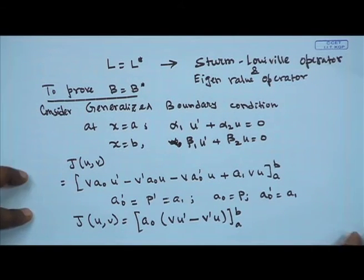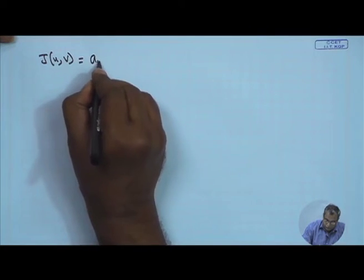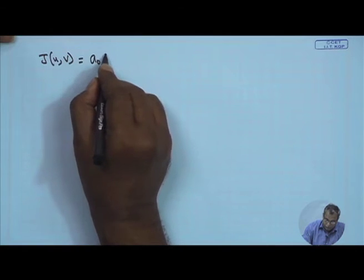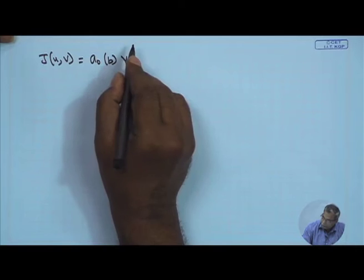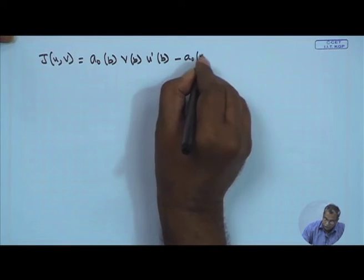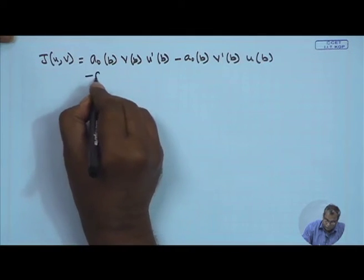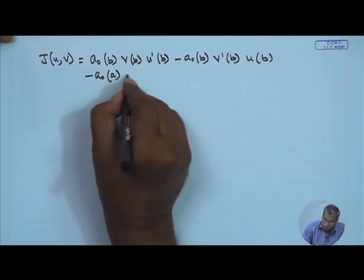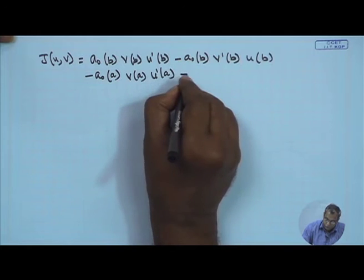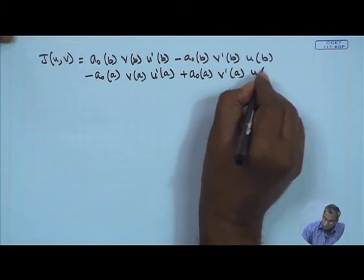We have already shown that a₀' = dp/dx = a₁, so a₀' = a₁. The bilinear concomitant reduces to a₀(v·u' - v'·u) evaluated between a and b.